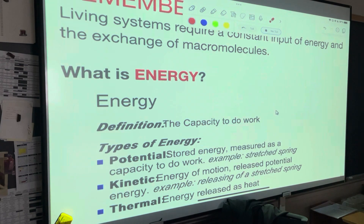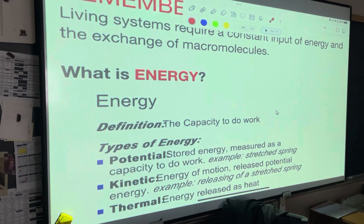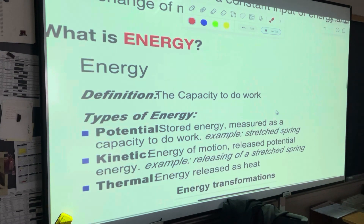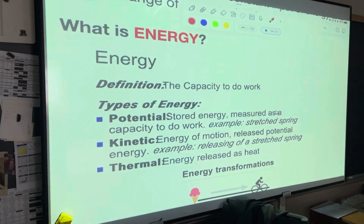The only time a human being usually doesn't have the capacity to do something is when they're dead — and then they don't need energy. But any other time you're breathing, you're moving, you're sitting here writing like mad. You have to have energy in order to do the work of taking notes and interacting. Some of you may recognize some of the types of energy. Potential energy — that means it's there, there's energy ready to be used to do work.